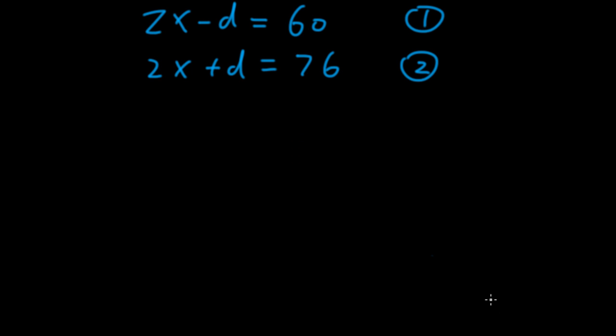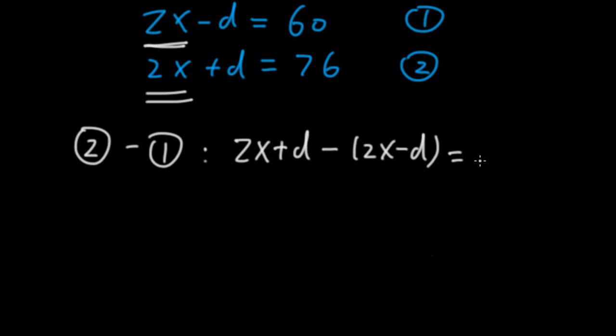And the fourth way of solving this system is by observing that we have 2x here in both equations. And we're interested in D. So we try to cancel out this x by subtracting one equation from another. Let's do equation 2 minus equation 1. The left-hand side of equation 2, 2x plus D minus the left-hand side of equation 1, 2x minus D equals the right-hand side of equation 2 minus the right-hand side of equation 1.